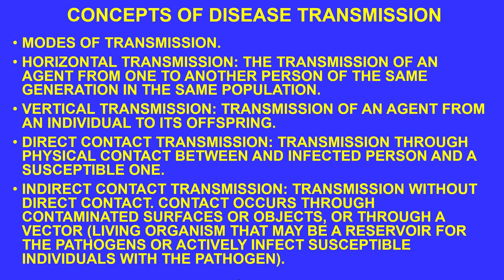Direct contact transmission is transmission through physical contact between an infected person and a susceptible one — such as a handshake or a kiss on the cheek. Indirect contact transmission occurs without direct contact, through contaminated surfaces or objects, or through a vector. A vector differs from a fomite: a vector is a living organism that may serve as a reservoir for pathogens or actively infect susceptible individuals.